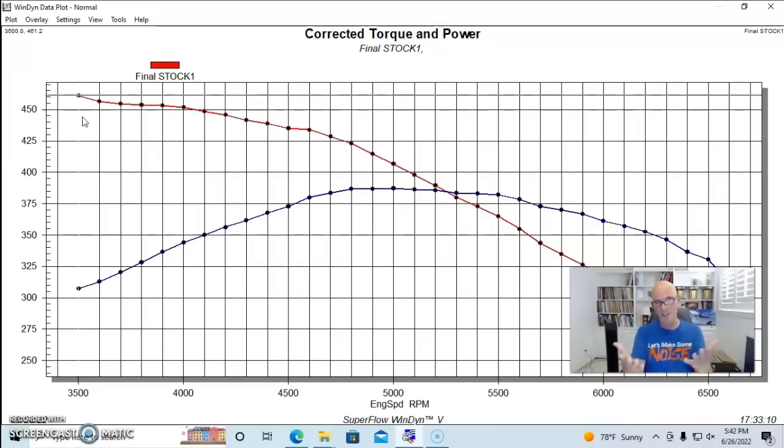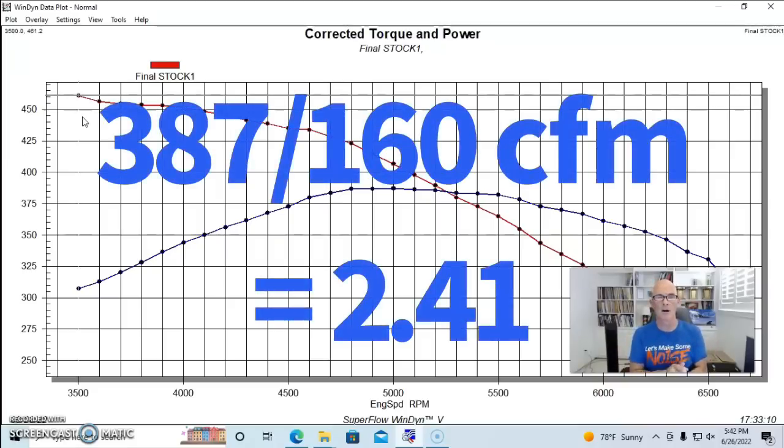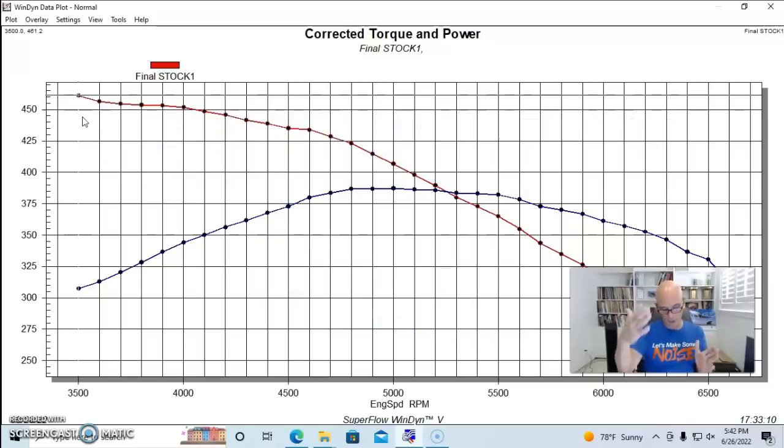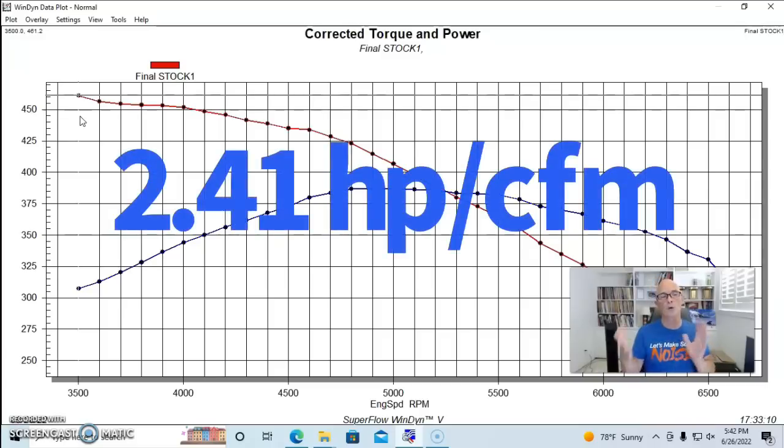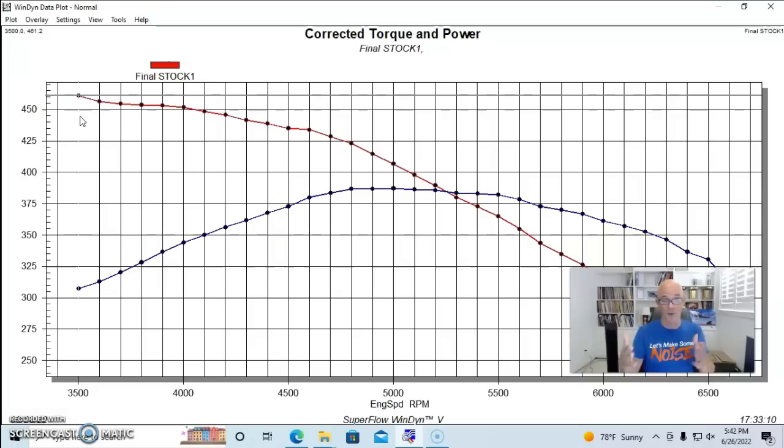So the interesting thing about this, we can take a look at the data. If we take our 160 CFM from our airflow testing on the stock head and we take a look at 387 horsepower, we see that this combination actually produced 2.41 horsepower per CFM, which is for me, I think is the highest number I've seen of any of the combinations that I've tested, specifically speaking. It's not that this thing made a lot of power, it's just that relative to the airflow it made a lot of power with very little airflow.